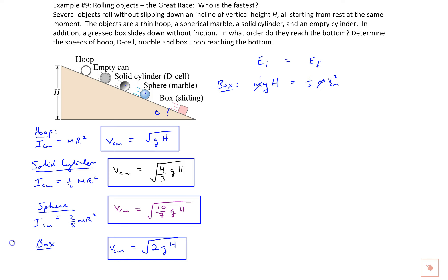So first place goes to the box, second to the sphere, third to the solid cylinder, and fourth to the hoop.